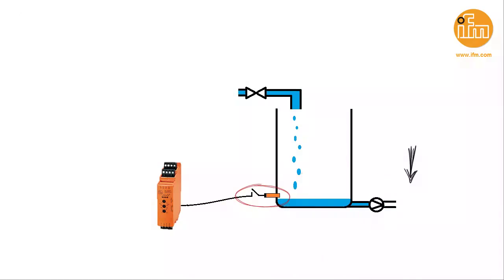The sensor sends a signal to the evaluation unit when it is no longer covered. The evaluation unit deactivates the pump.